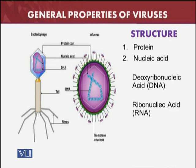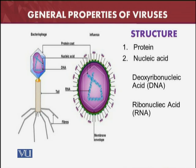Regarding the structure of viruses, we have already taken a bird's eye view of the general structure. There are two kinds: simple viruses and complicated viruses. Simple viruses are only composed of nucleic acid and a protein coat — for example, the bacteriophage and the influenza virus shown in the PPT. The bacteriophage is a DNA virus and the influenza virus is an RNA virus. The bacteriophage has a tail and fibers, while the membrane-enveloped influenza virus is different, showing how different viruses can be.